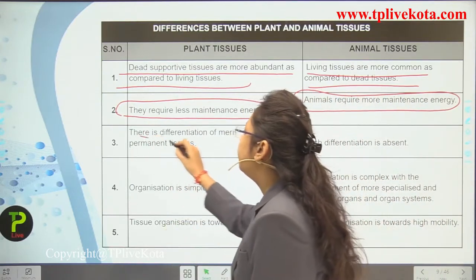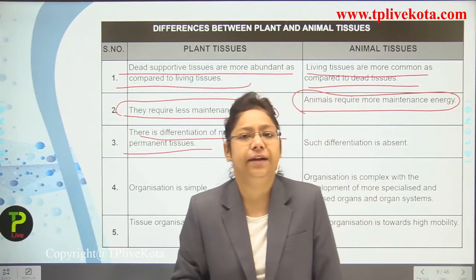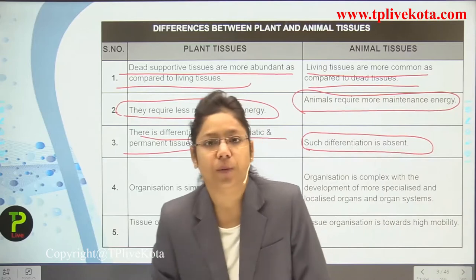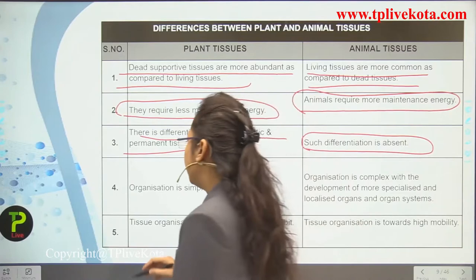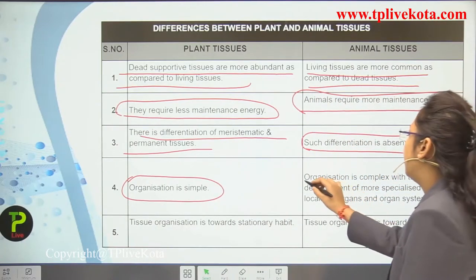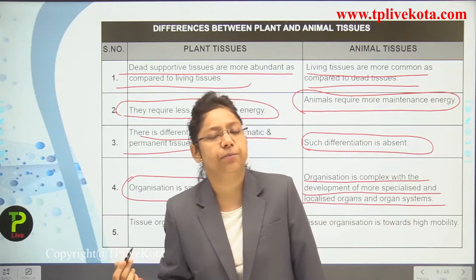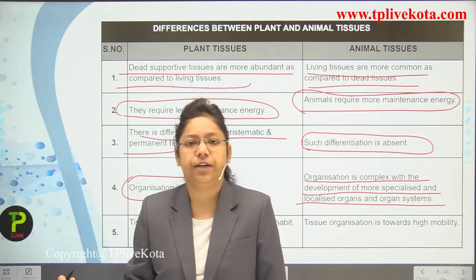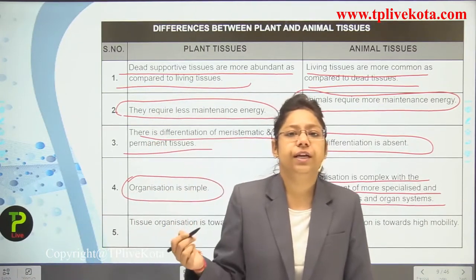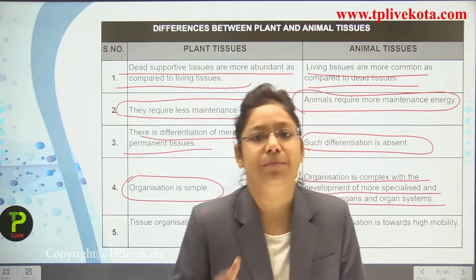Third, in plants there is differentiation of meristematic and permanent tissues — meristematic tissues are dividing, permanent tissues are non-dividing. In animals, such differentiation is absent; only non-dividing tissues are present. Fourth, plant tissue organization is simple, while in animals it is complex with more specialized localized organs and organ systems performing different functions.